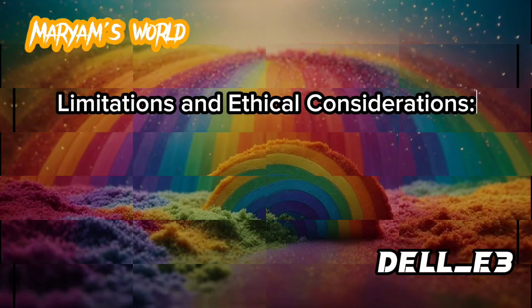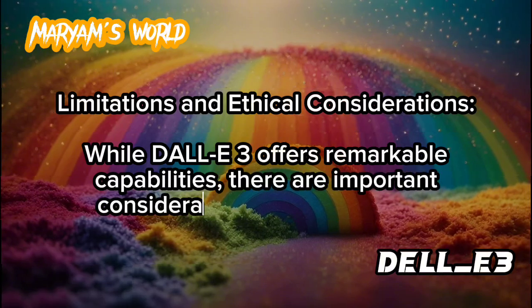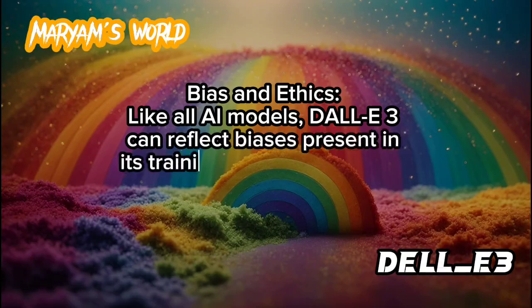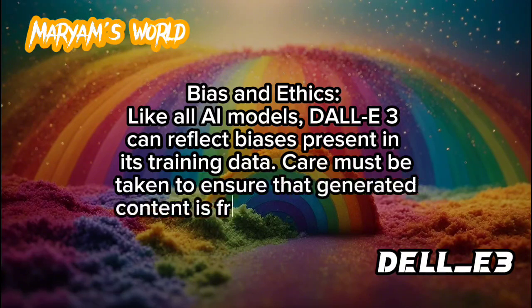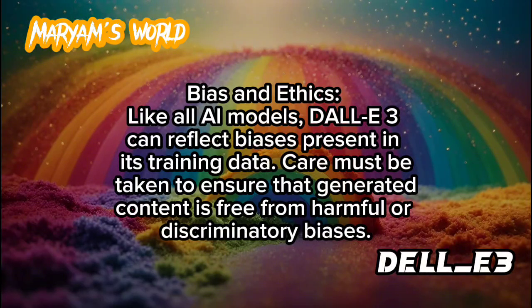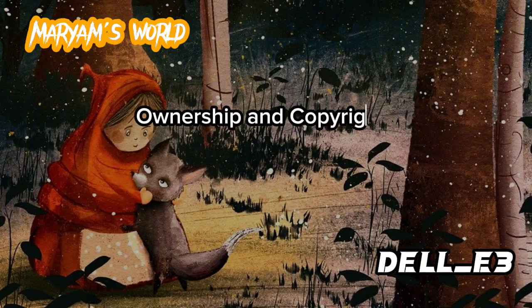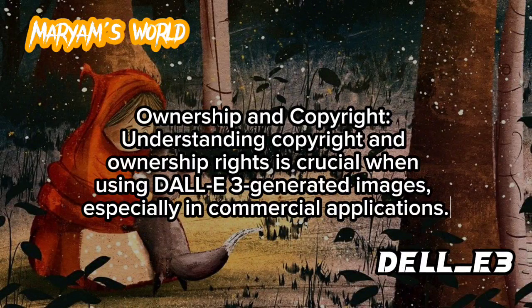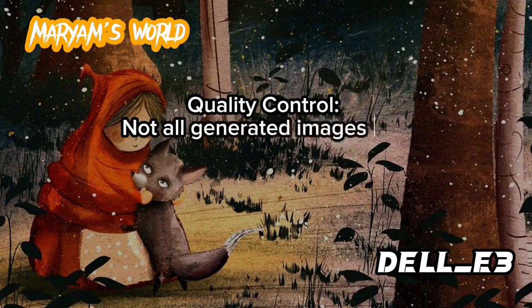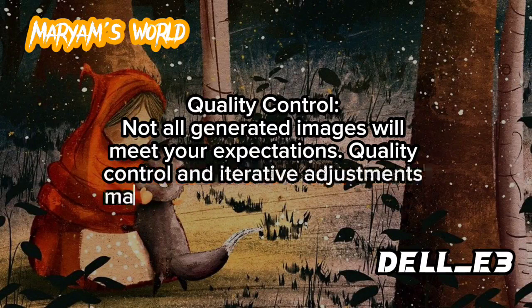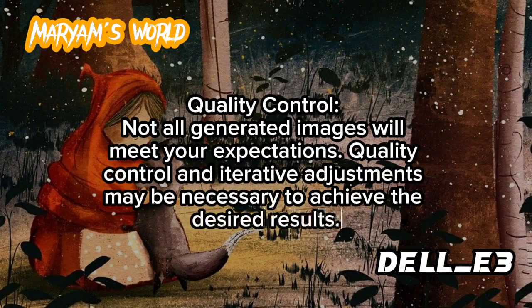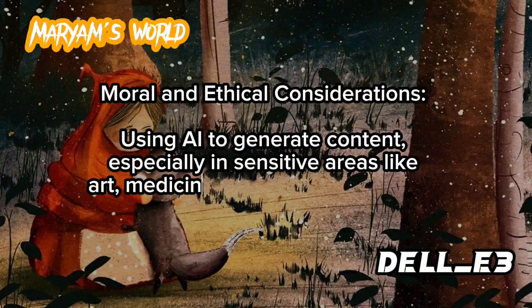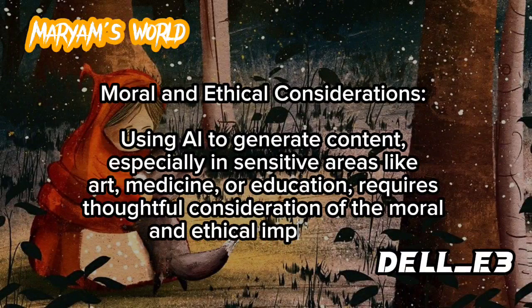While DALI 3 offers remarkable capabilities, there are important considerations to keep in mind. Like all AI models, DALI 3 can reflect biases present in its training data, and care must be taken to ensure generated content is free from harmful or discriminatory biases. Understanding copyright and ownership rights is crucial, especially in commercial applications. Not all generated images will meet expectations, so quality control and iterative adjustments may be necessary. Using AI to generate content in sensitive areas like art, medicine, or education also requires thoughtful consideration of moral and ethical implications.